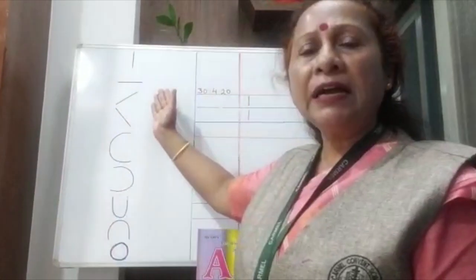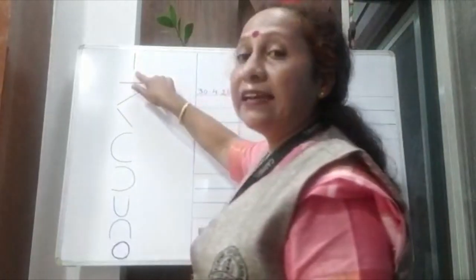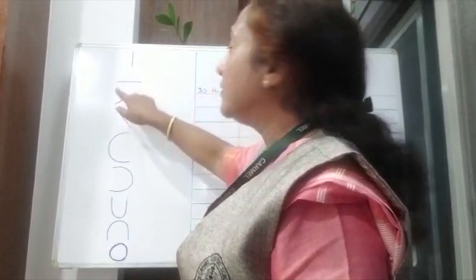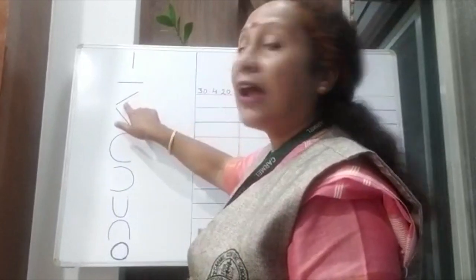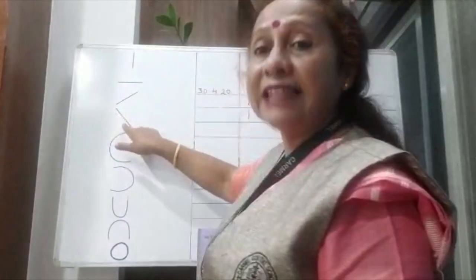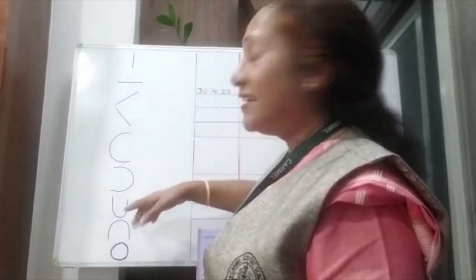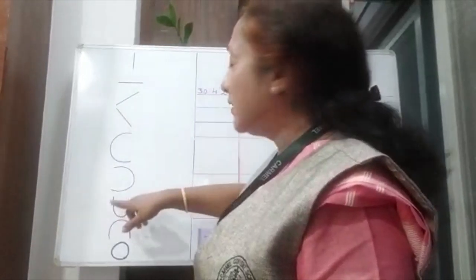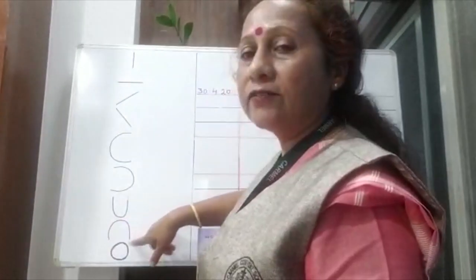Some kinds of strokes and lines are here on my whiteboard. Look at this. This is a standing line. This is a sleeping line. This is a right slanting line. This is a left slanting line. This is a right curve. This is a left curve. This is an up curve. This is a down curve.